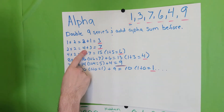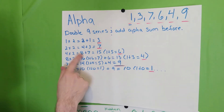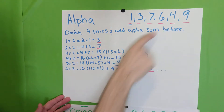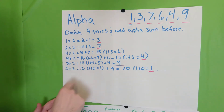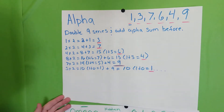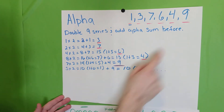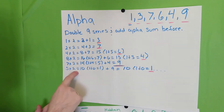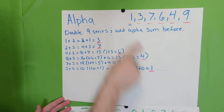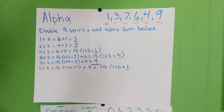2 times 2 is 4, plus 3 is 7 — there's your next number. 4 times 2 is 8, plus 7 is 15; 1 plus 5 equals 6 — that's your next number. 8 times 2 is 16; 1 plus 6 equals 7, plus 6 equals 13; 1 plus 3 equals 4. 7 times 2 is 14; 1 plus 4 is 5, plus 4 is 9. 5 times 2 is 10; 1 plus 0 is 1, plus 9 equals 10; 1 plus 0 is 1 — and it starts all over again. That is your alpha series.